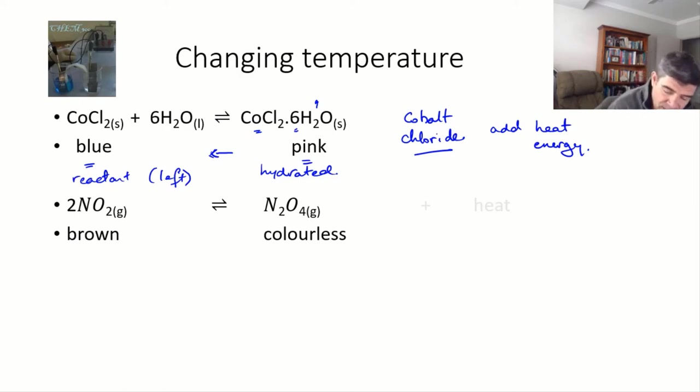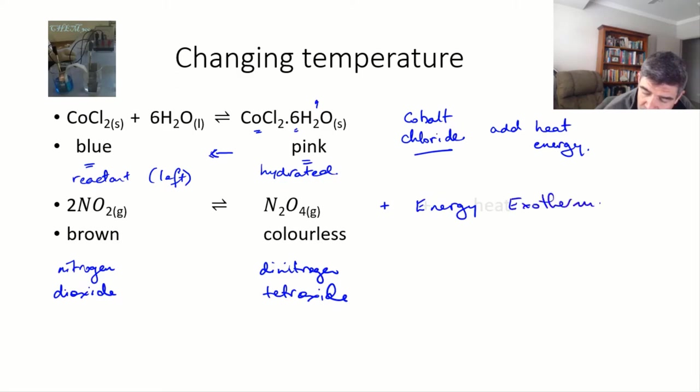Here's the second example. This is nitrogen dioxide as a reactant and dinitrogen tetroxide as a product. This is an exothermic reaction as energy is a product, and if energy is a product, then we have an exothermic reaction, or delta H is negative.